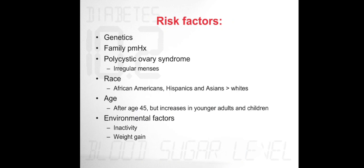Risk factors for Type 2 diabetes include mainly genetics and family history, polycystic ovary syndrome, and irregular menses. Race is also a factor — African Americans, Hispanics, and Asians have a higher rate of developing diabetes than white people. Risk increases after the age of 45, though cases are rising in younger adults and children. Environmental factors include inactivity and weight gain.